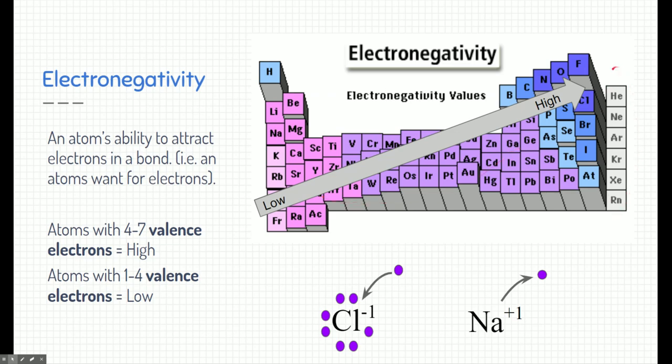Now notice that the noble gases, their electronegativity is null because they don't really attract electrons, and they won't get rid of electrons. They are non-reactive. They're set in stone, and they have all the electrons they want with eight electrons.